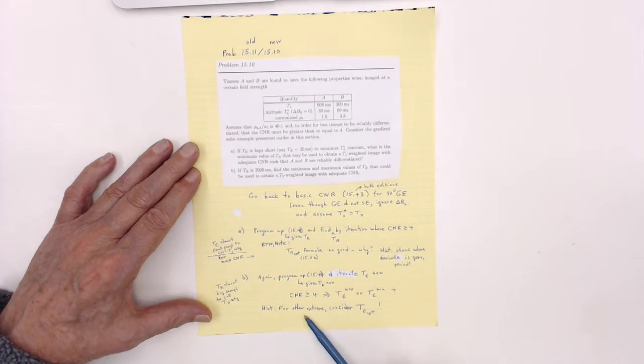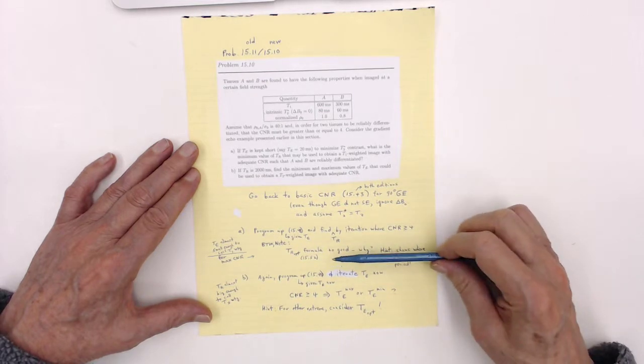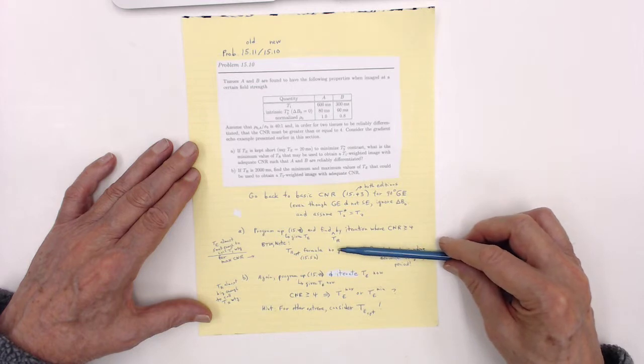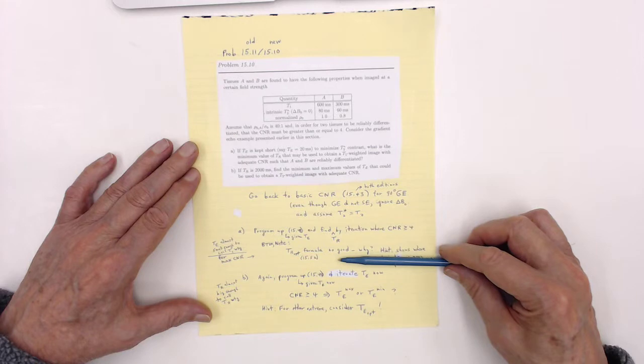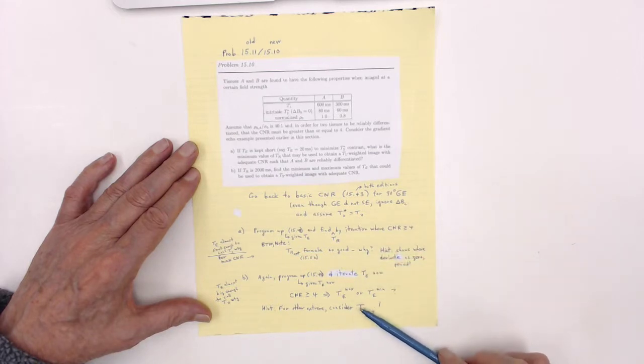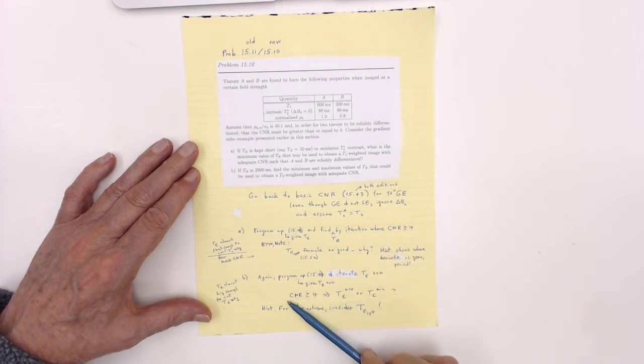Hint. For the other extreme, why don't you look at TE optimal, because you can't take TE go to zero, you do that and it's not going to be sensitive to T2, it's going to be sensitive just to the density difference. But there is an optimal, what does that correspond to, is that a max or is that min? And this part here, is this a max or min, this will be the other one. This will give you one of them, this will give you the other.